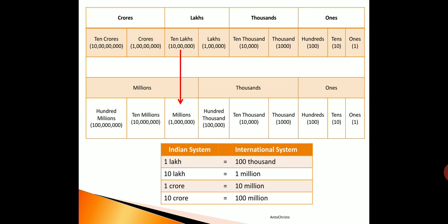Similarly, the second comparison: ten lakh is equal to one million. Look at where the arrow mark is blinking in the Indian system — it is ten lakh — and straight across it is one million. The third comparison: one crore is equal to ten million. You can see one crore in the chart, and straight across it is ten million. In all these comparisons, you can notice that the number of zeros and ones present are the same.